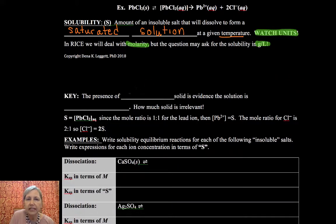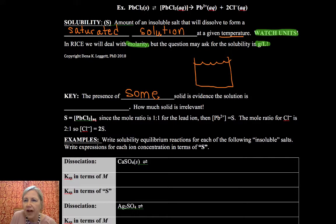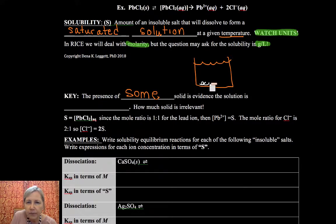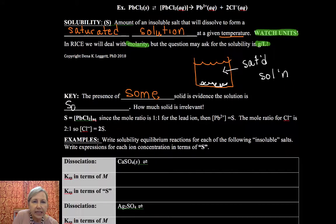Now, as we're solving these, the key is this: the presence of some solid. So if I have a beaker with a solution, if I have at least some solid, I know that I have a saturated solution because there's some that did not dissolve. So this is evidence that the solution is saturated, and that's the point at which we will be doing these Ksp values.